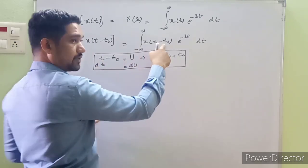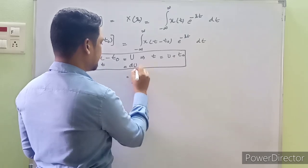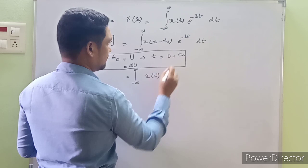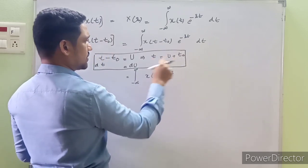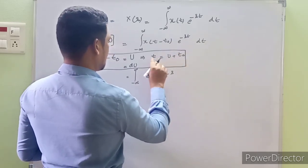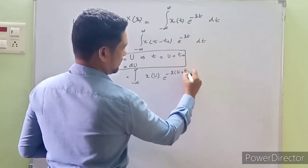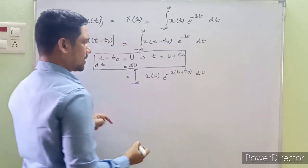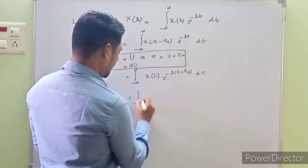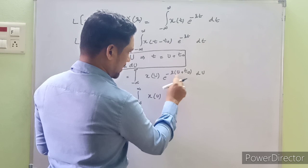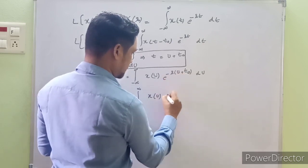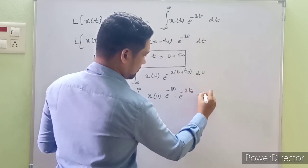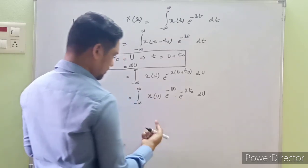Plugging in these values, the integral becomes: from minus infinity to infinity, X(t - t₀) is replaced by X(u), T in the exponent becomes u + t₀, and dT becomes du. So we have the integral of X(u) · e^(-s(u + t₀)) du. Expanding the exponent, the powers are added: e^(-su) · e^(-s·t₀), giving us the integral of X(u) · e^(-su) · e^(-s·t₀) du.